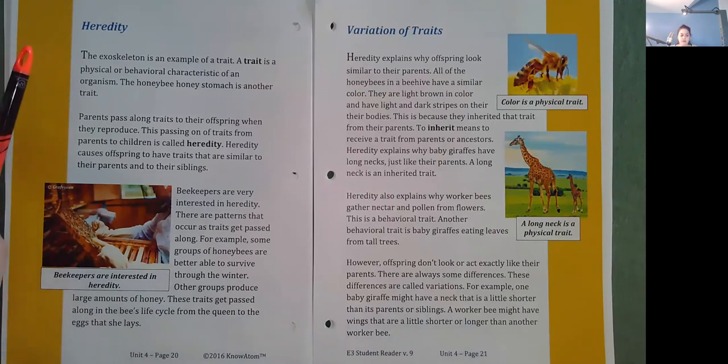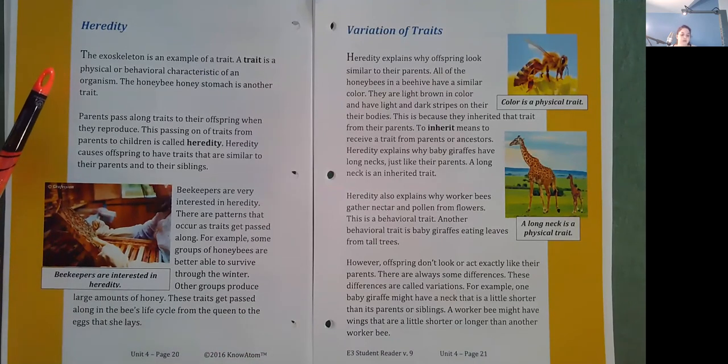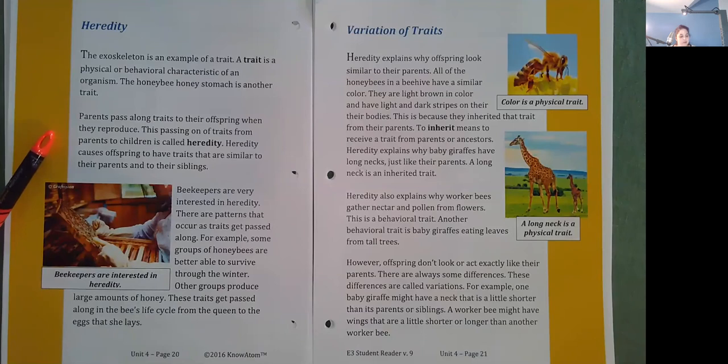Heredity. The exoskeleton is an example of a trait. A trait is a physical or behavioral characteristic of an organism. The honey bee honey stomach is another trait. Parents pass along traits to their offspring when they reproduce. This passing on of traits from parents to children is called heredity. Heredity causes offspring to have traits that are similar to their parents and to their siblings.